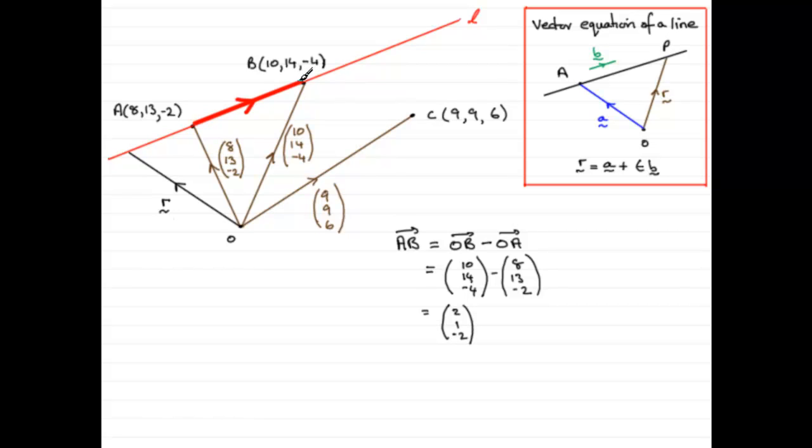If we wanted the vector B to A, it would just be the negative of this. Now, for the vector equation of the line L, we're in a position to get it. So, let's just put, therefore, the equation of L is. And what is it? Well, we need the position vector of any point on the line. That's just going to be R.